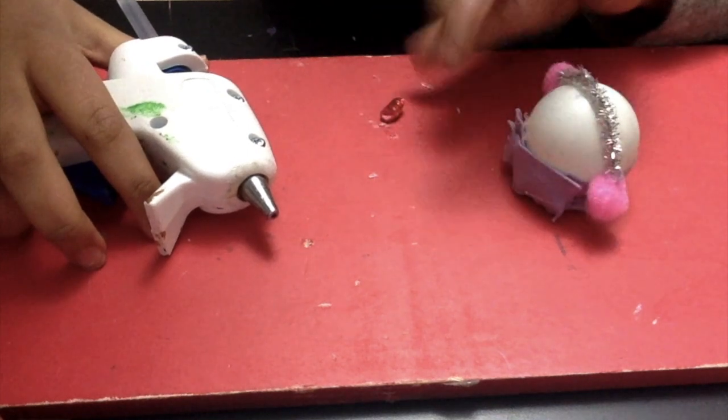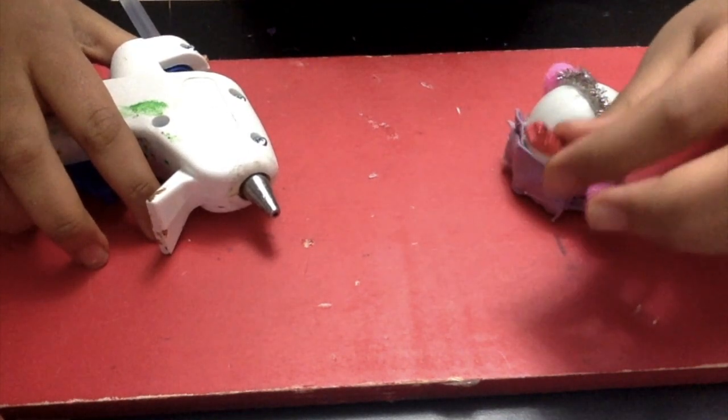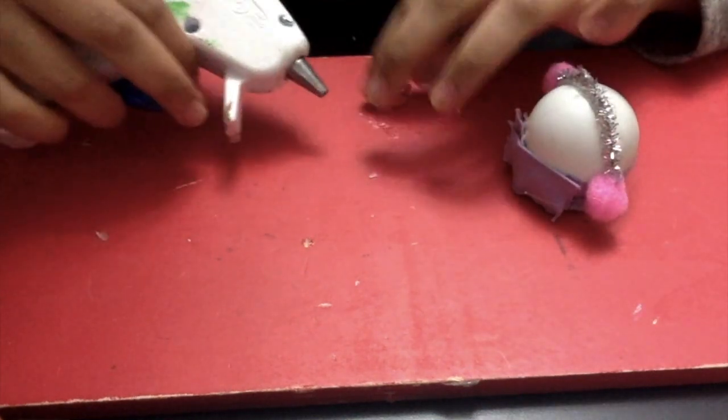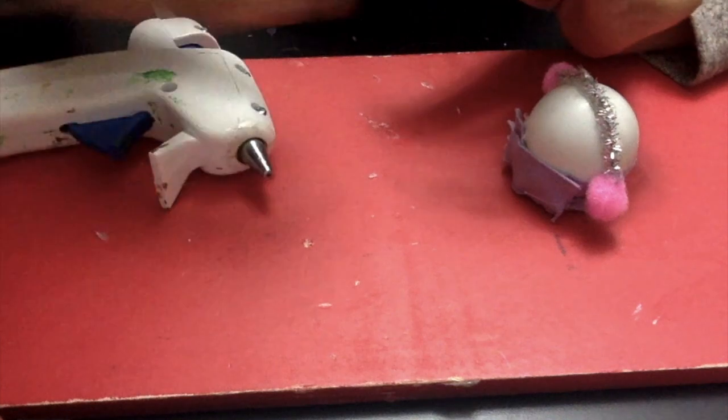For the snowman's nose you can take a piece of paper or felt of whatever color you like the snowman's nose to be and roll it up. You will then take some hot glue and stick the nose onto the snowman.